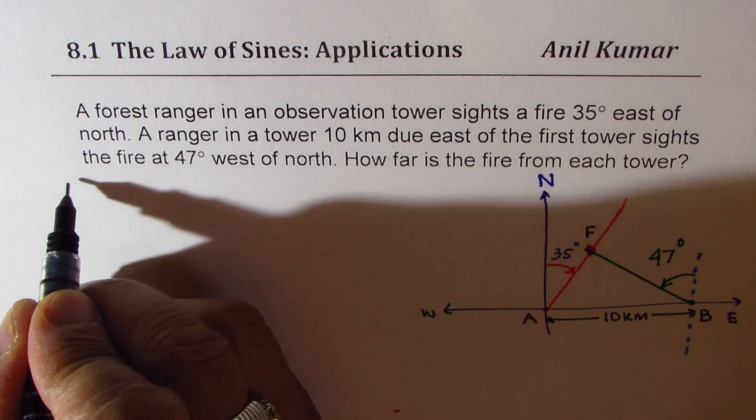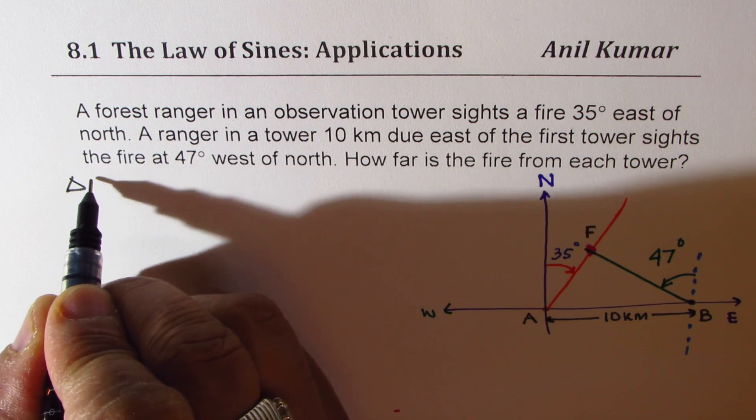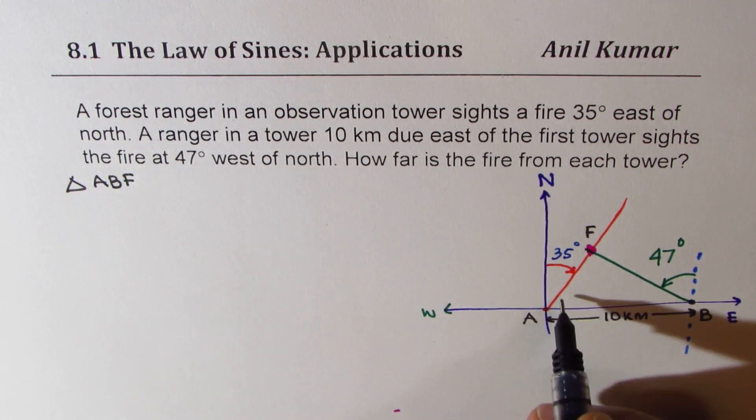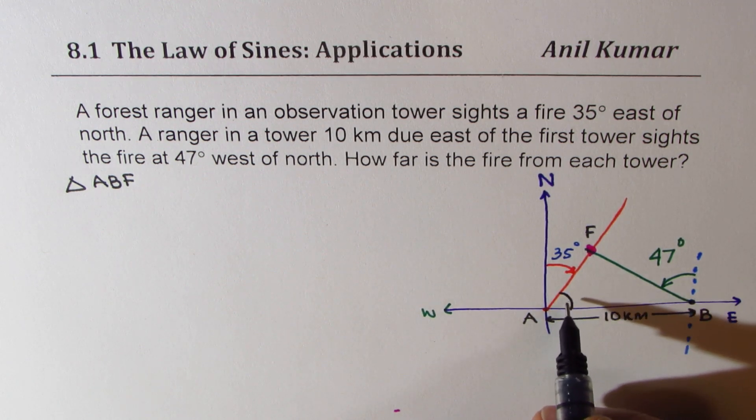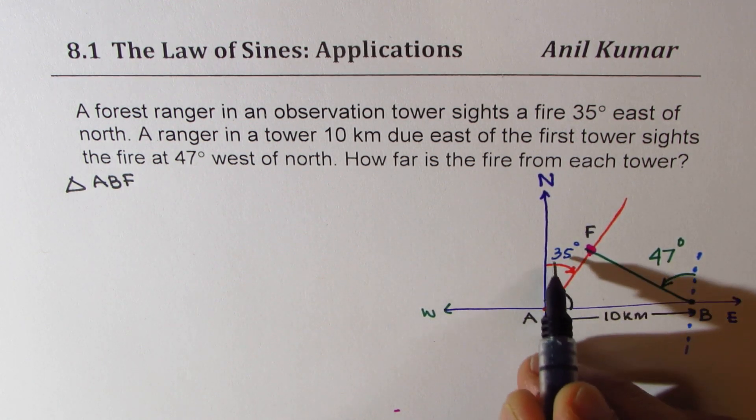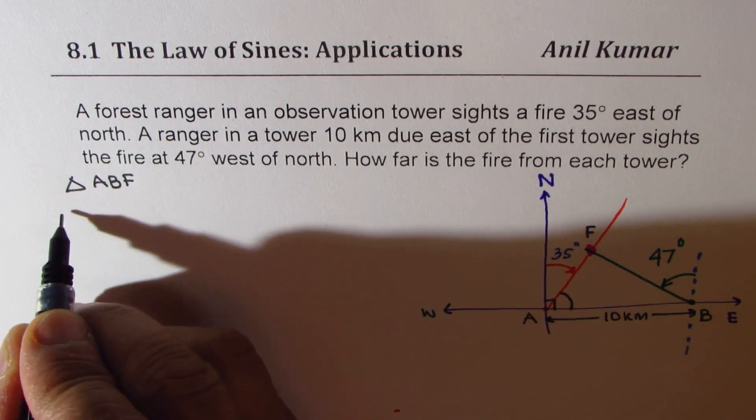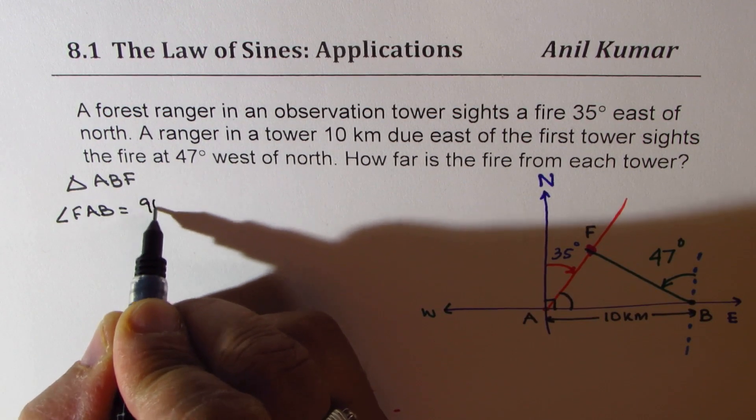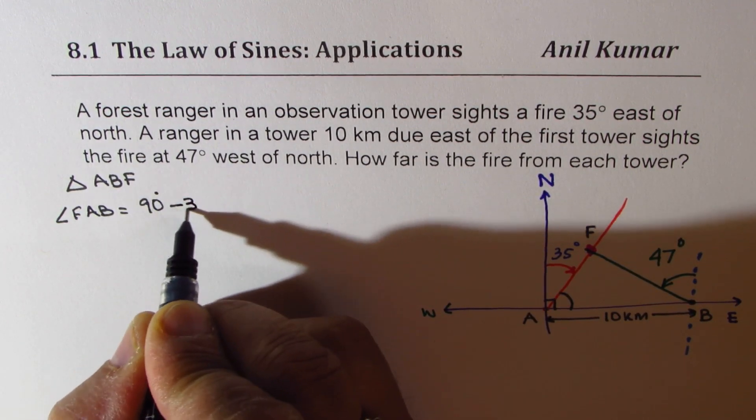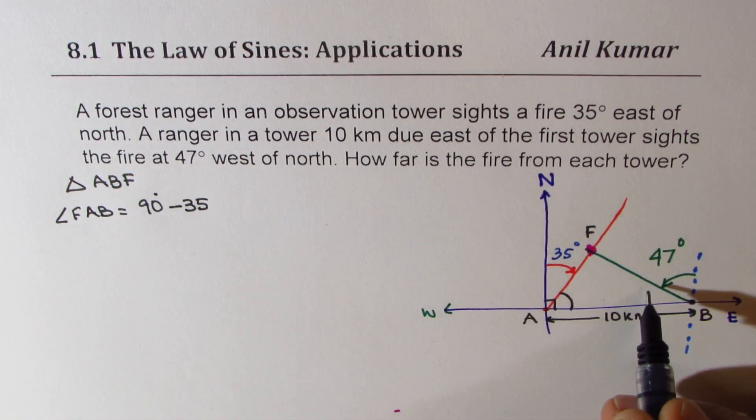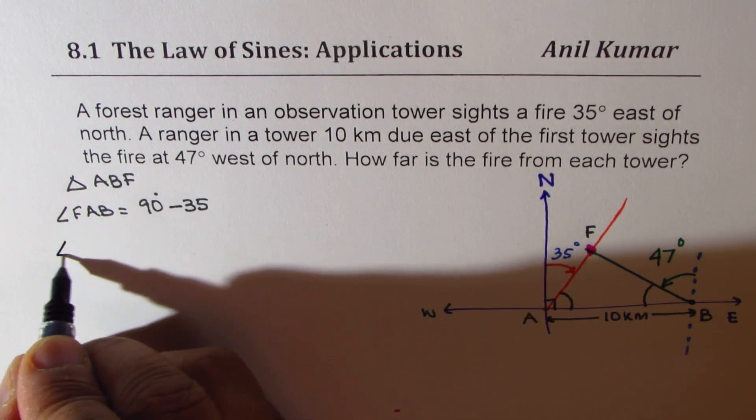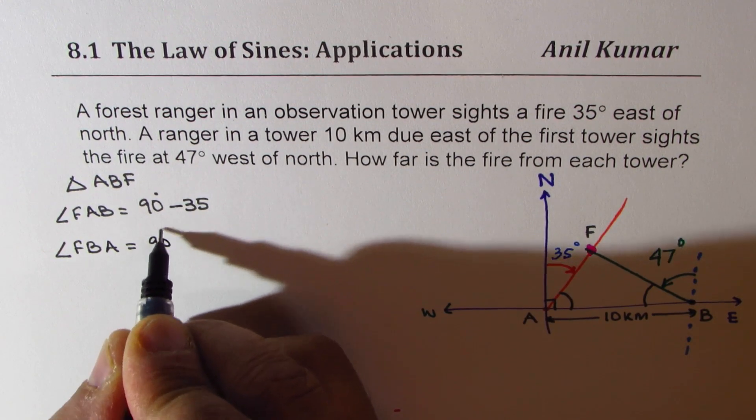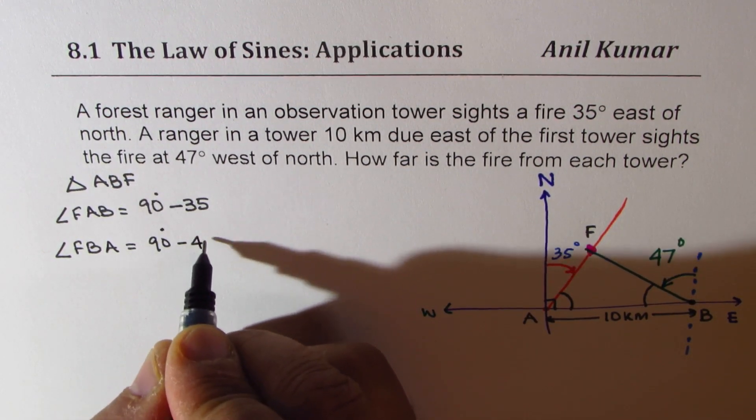So let's look into the triangle ABF. So let's find all the angles. So this angle is what? This angle has to be 90 minus 35. So the angle FAB should be 90 degrees minus 35 degrees. How about that angle? That is to say the angle FBA is how much? That should be 90 degrees minus 47 degrees.